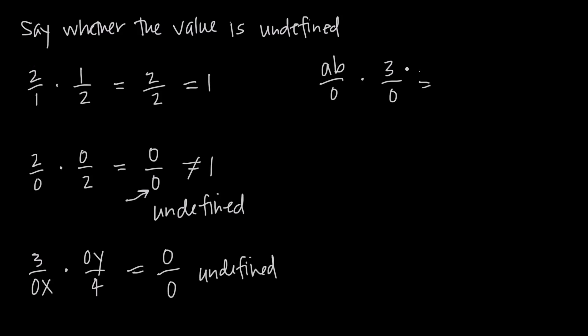Looking at this example over here, when we multiply our numerators together, we get ab times 3, or in other words, 3ab in the numerator. And in the denominator, we have 0 times 0, which we know is 0.